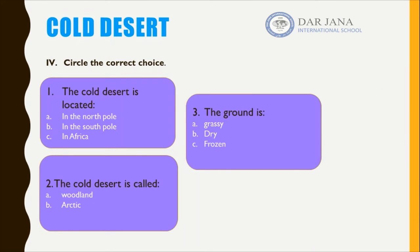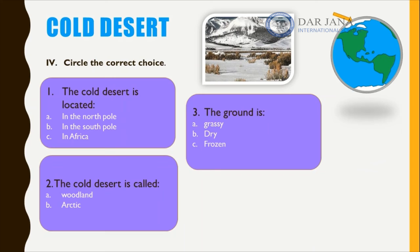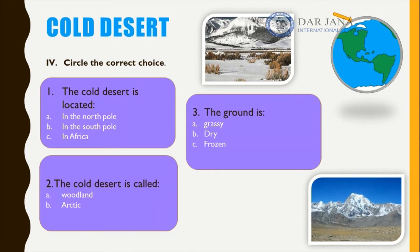Now we will solve exercises about the cold desert, which we call the arctic. In the pictures, snow covers most of the place and there are very short plants, because tall trees would die from the cold wind. The arctic is found at the north pole, and the ground is frozen — not grassy, not dry, but frozen.